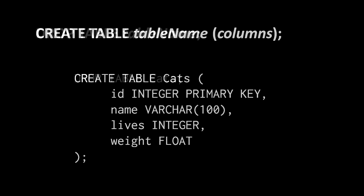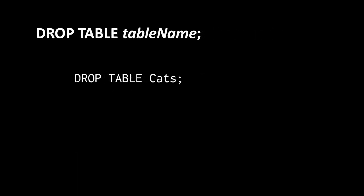To remove a table from the database we use the drop statement — we write drop table and then the name of the table. So drop table cats will remove the cats table from our database. Be clear that this will destroy the data in the cats table, so any data we've inserted will get lost.